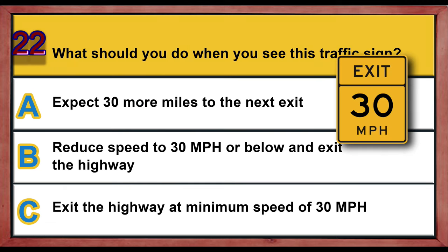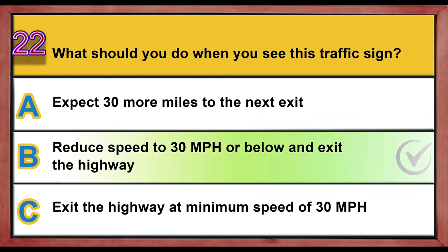Question 22. What should you do when you see this traffic sign? A. Expect 30 more miles to the next exit. B. Reduce the speed to 30 miles per hour or below and exit the highway. C. Exit the highway at a minimum speed of 30 miles per hour. Correct answer is B: Reduce the speed to 30 miles per hour or below and exit the highway.